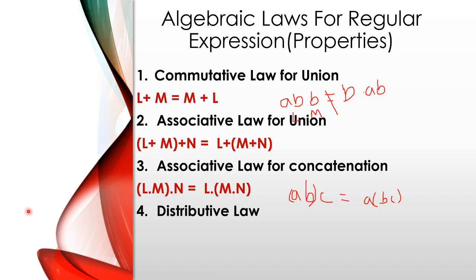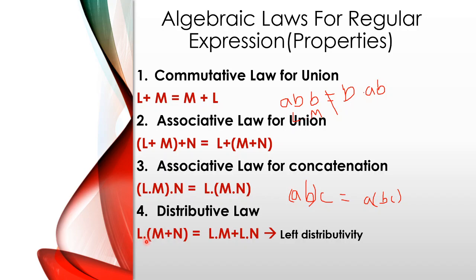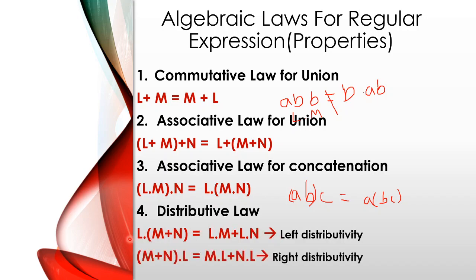Next is the distributive law, which has two forms: left distributive law and right distributive law. Left distributive law: L into (M plus N) is equal to (L into M) plus (L into N). Right distributive law: (M plus N) into L is equal to ML plus NL.